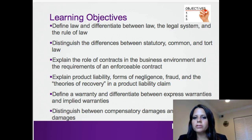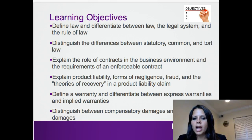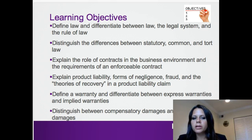Our objectives for today will be to define and differentiate between the law, the legal system, and rule of law. We'll also distinguish the differences between statutory, common, and tort law. We'll explain the role of contracts in the business environment and the requirements of an enforceable contract. We'll also explain product liability, forms of negligence, fraud, and the theories of recovery in a product liability claim. We'll define a warranty and differentiate between express and implied warranties. Finally, we'll distinguish between compensatory damages and punitive damages.